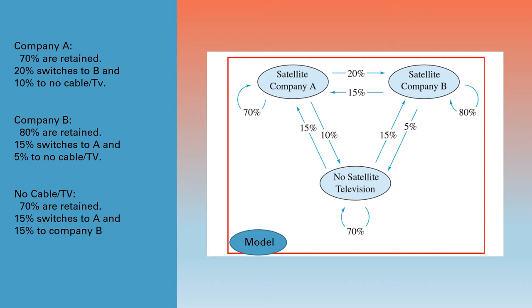The same way for the second circle represents cable company B, and the third circle represents no cable TV. So we have this diagram, this tree diagram helps us to understand what this matrix will look like.